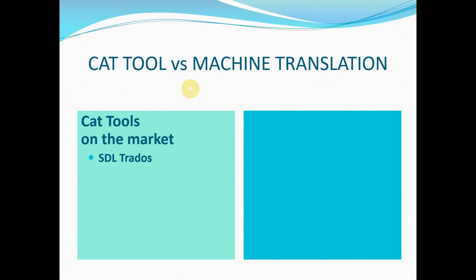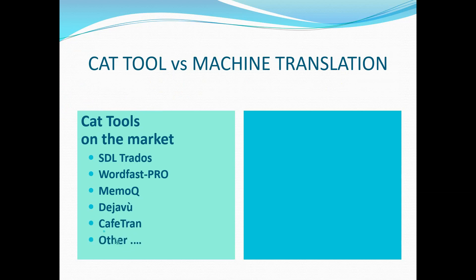Let's see what CAT tools we have on the market. We have SDL Trados of course, we can also have Wordfast Pro, we also have MemoQ and then Déjà Vu, one more CafeTran for example, but we also have many others of course.